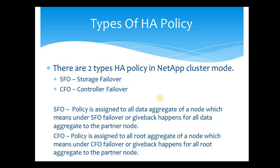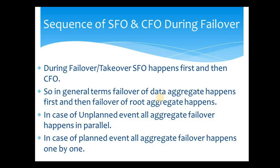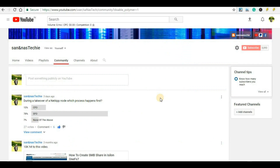Now let's explain the sequence of SFO and CFO during failover. Whenever a takeover event happens, SFO happens first and then CFO happens. This means the failover of data aggregates happens first, and then the failover of root aggregates happens. This also gives us the answer to our poll: during a takeover, the process that happens first is SFO — storage failover.